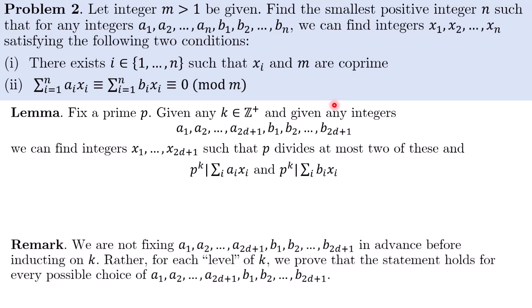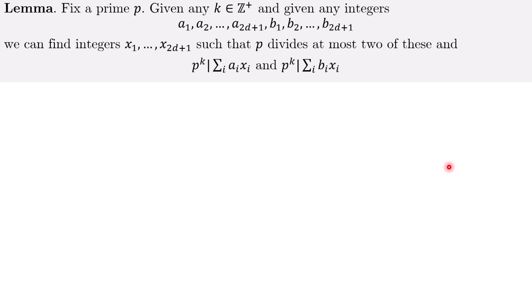And the way we will prove the lemma is we will prove by induction on k. And it's important to note that we are not fixing the a's and the b's in advance before inducting on k. Rather, for the proof, we will proceed level by level where for each level of k, we will prove the statement holds for every possible choice of a's and b's. And then move on to the next level of k, prove the statement holds for every possible choice of a and b, and so on. And now I will be proving the lemma. I will do so using tools from linear algebra to help me along. So it is possible to convert all of the language of linear algebra into pure number theory terms, but I will do so to showcase how linear algebra can sometimes be used to solve certain Olympiad problems, even though it is not expected that most contestants will have that knowledge.